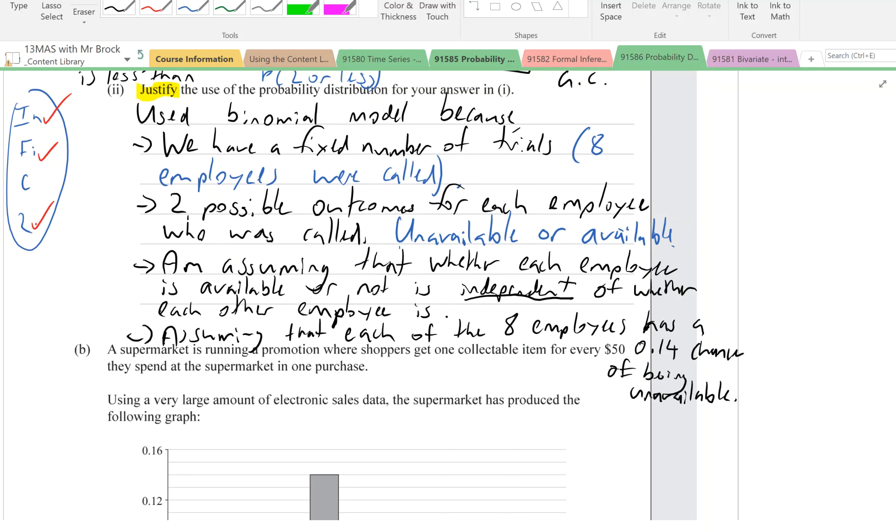We've been through our four conditions and we've linked each one to the context. If you don't link it to the context, guess what grade you get for the question? A big fat round zero.